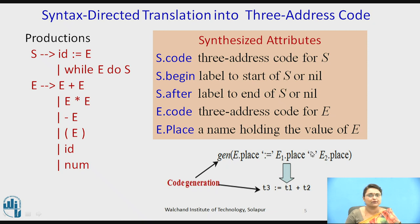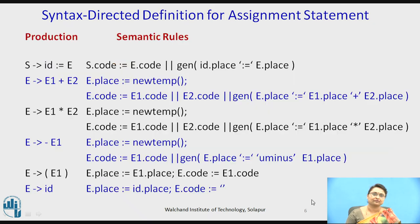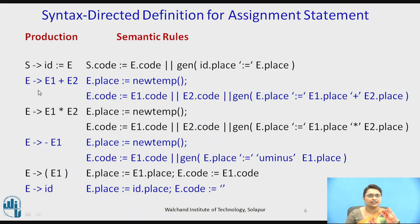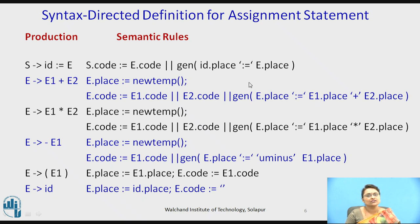The generate function produces three-address code, writing e1's place value, assigning the operator, and the temporary variable. For the production s producing id assigns to e, the three-address code of s is the three-address code of e, followed by a generated statement: the place value of id assigns to the place value of e — whether it is a temporary or an identifier.